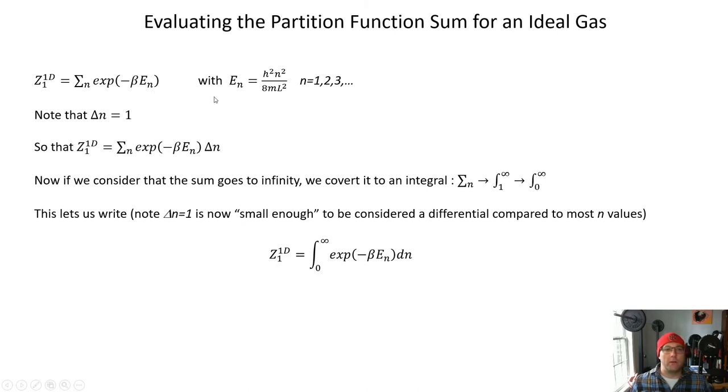So we're going to substitute in this expression for E_n where n is an integer starting at 1 and going up as high as we want. We should note that delta n is equal to 1. And so we can actually rewrite the whole partition function in a sneaky way by saying sum on n, e to the minus beta E_n times delta n, because this is just multiplying through by 1. That's cute, isn't it?